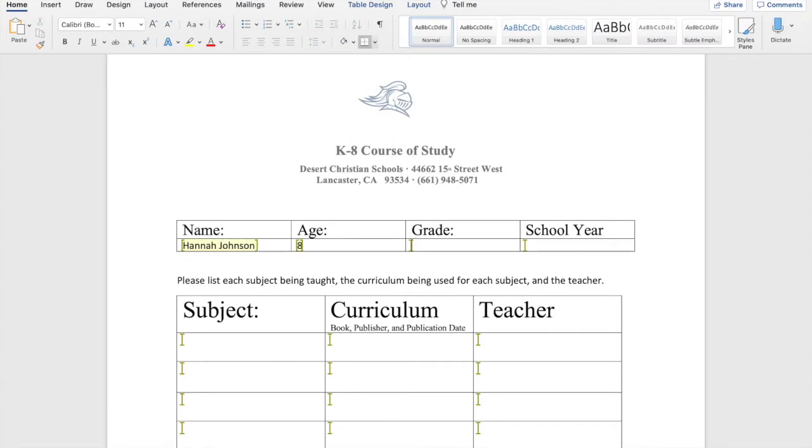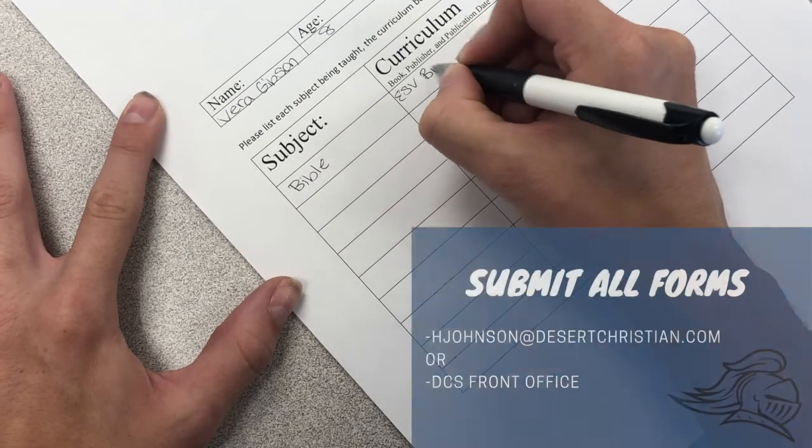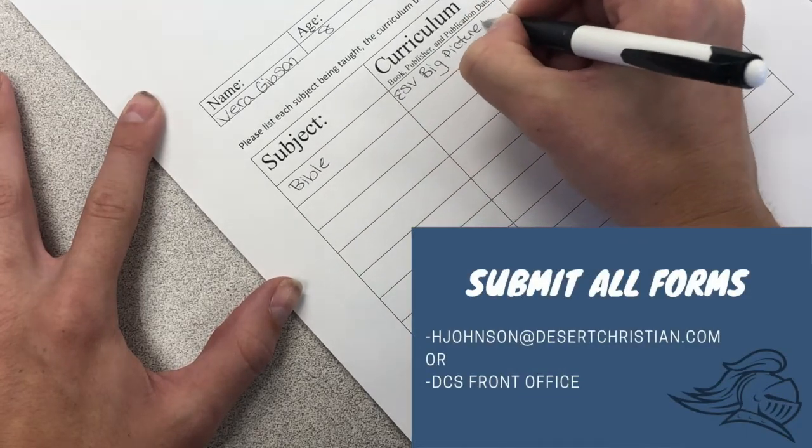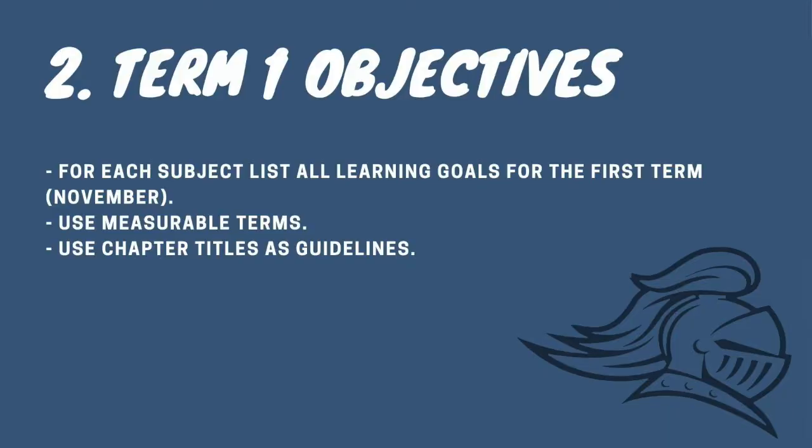List each subject, book, and teacher for the year, then email a copy to hjohnson@desertchristian.com or turn a hard copy in at the front office. The second form for initial reporting is called the Term One Objectives. It can also be found on the website under Parent Tools.